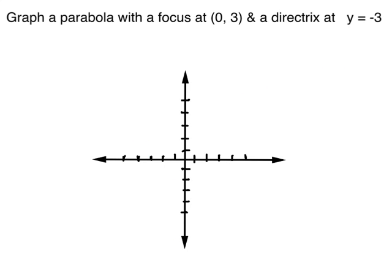Let's start graphing a parabola. We have a parabola with a focus of (0, 3) and a directrix at y equals negative 3. The focus is a point, so let's graph it. The x-coordinate is 0, the y-coordinate is 3. There's the focus.